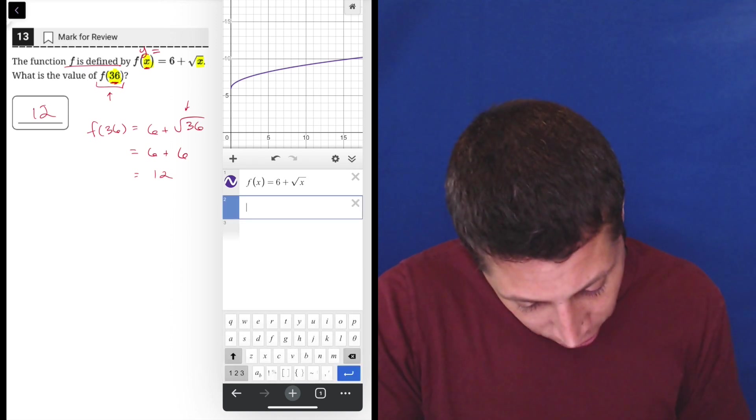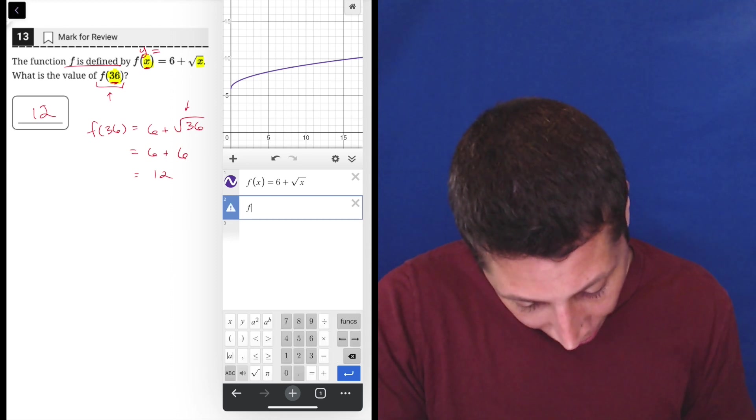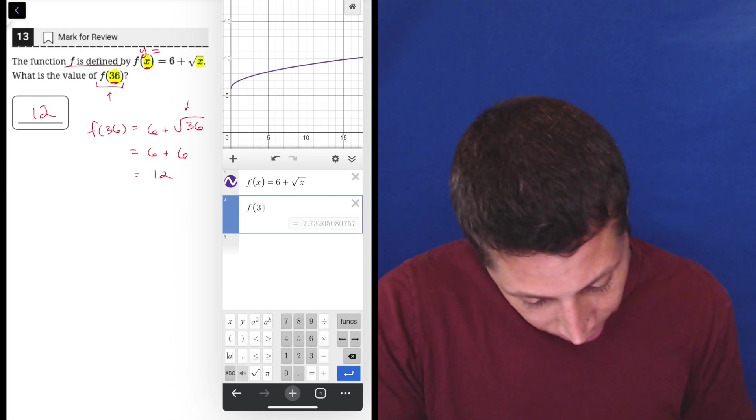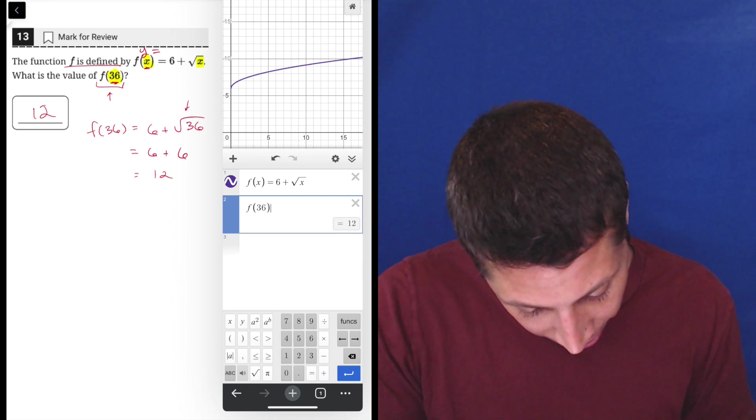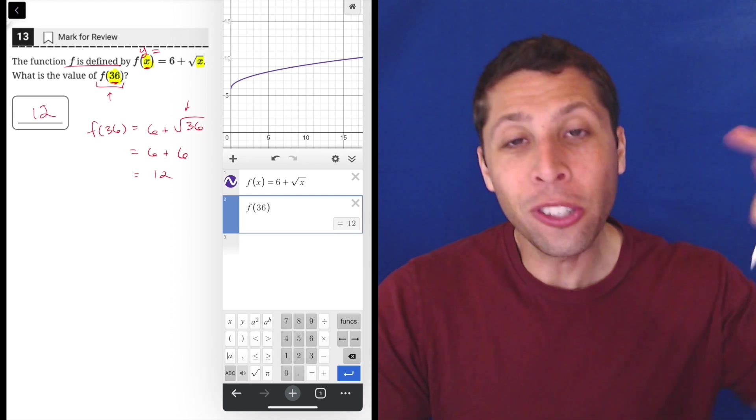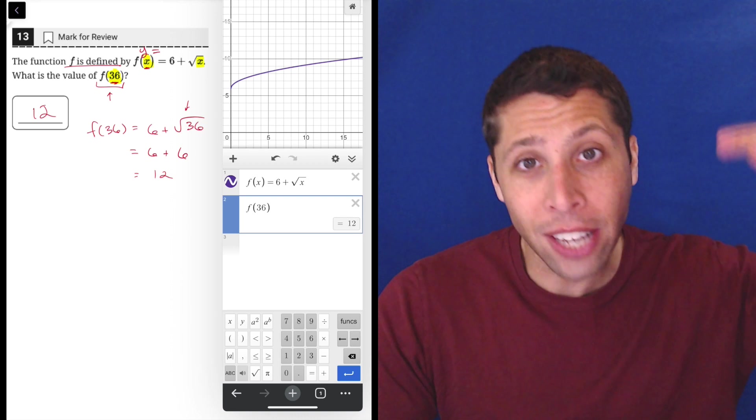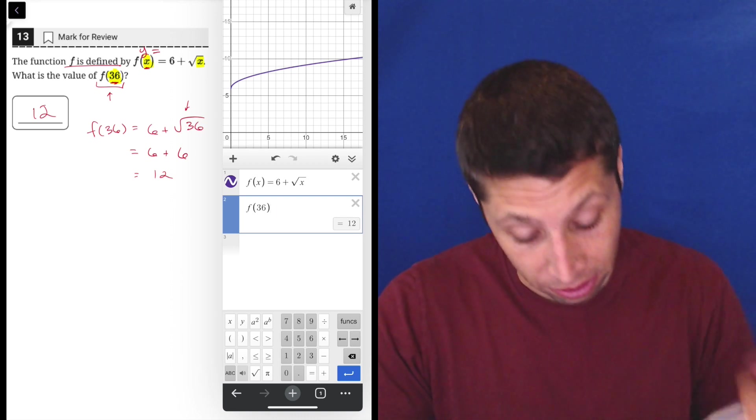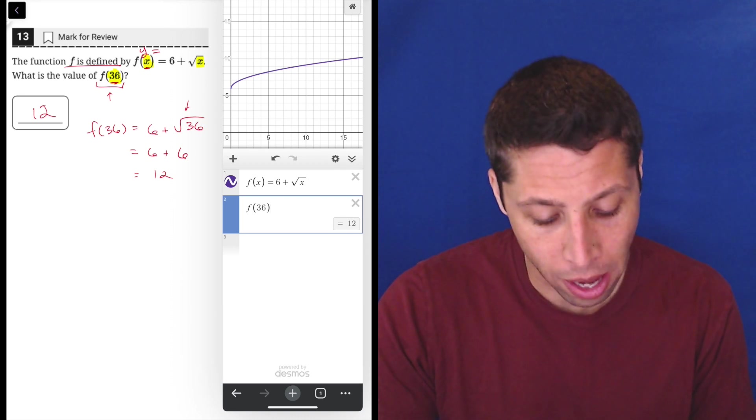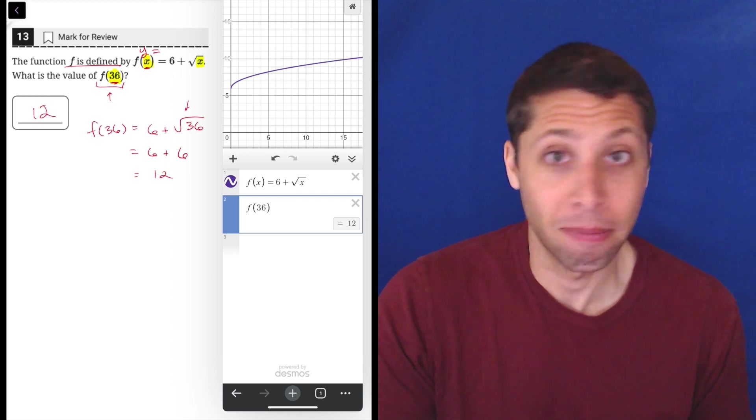But if I wanted to know this exact one, I could just, again, go to the ABCs, get my f, get my parentheses, and I think I can just put 36. And look, there it is. It knows to use the f of x equation that I just typed and plug the 36 into that. And so now it's giving me the 12 just right there as my answer.